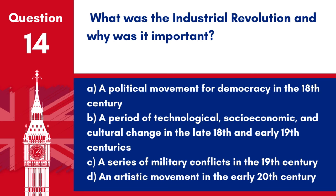Question 14. What was the Industrial Revolution and why was it important? A. A political movement for democracy in the 18th century. B. A period of technological, socioeconomic, and cultural change in the late 18th and early 19th centuries. C. A series of military conflicts in the 19th century. D. An artistic movement in the early 20th century. Answer: B. The Industrial Revolution was important as it marked a major turning point in history, with significant changes in manufacturing, transport, and technology.